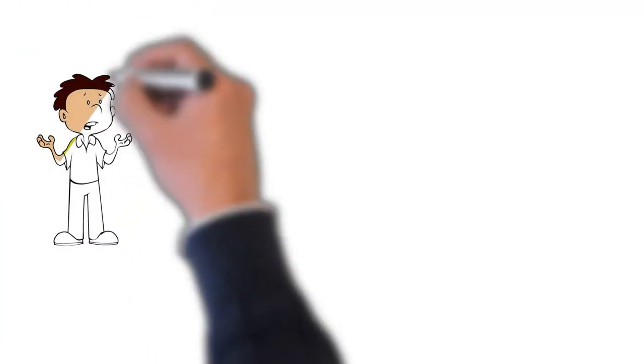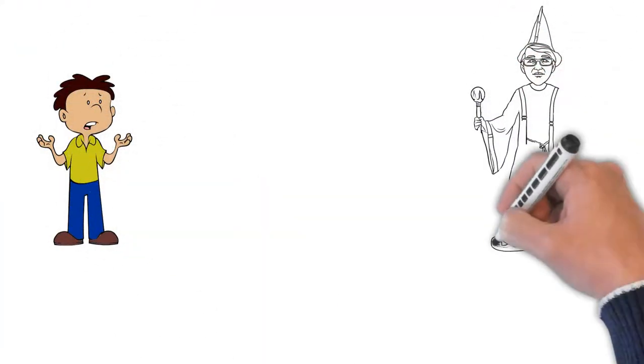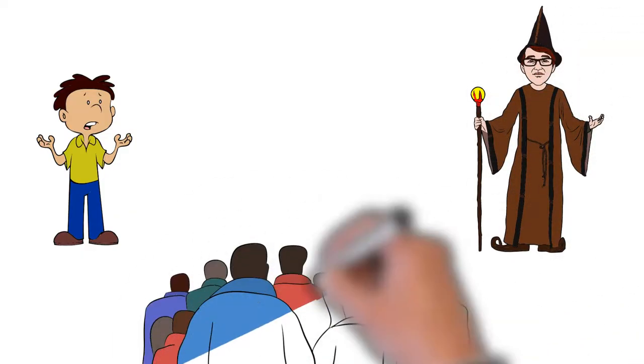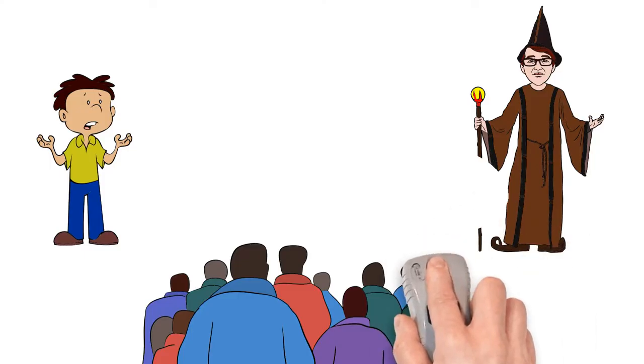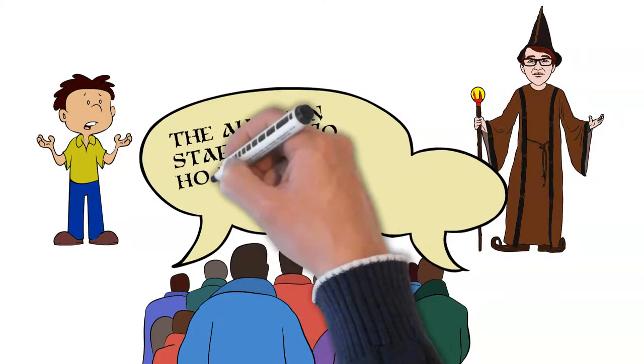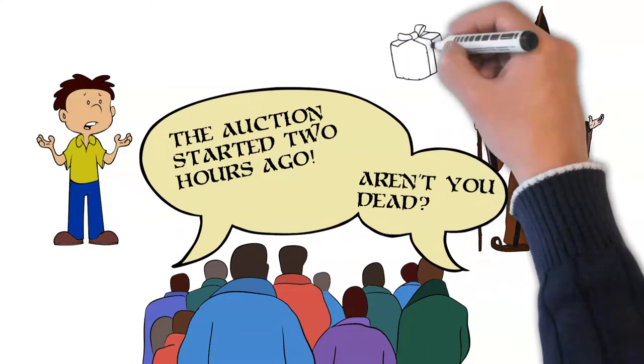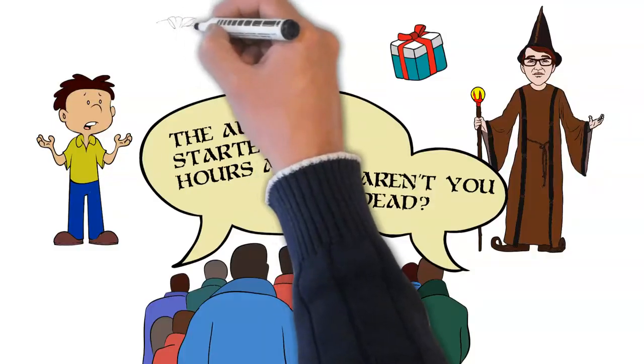However, upon their return to Hobbiton, Bilbo and Gandalf are met with chaos. Bilbo's house is in disarray due to an auction selling off his belongings as the hobbits had presumed him dead. Convincing everyone of his return proves to be a challenging task, and Bilbo finds himself having to buy back some of his own possessions. Despite the damage to his reputation, Bilbo remains content. He keeps his magic ring a secret, and uses his wealth to shower others with gifts.